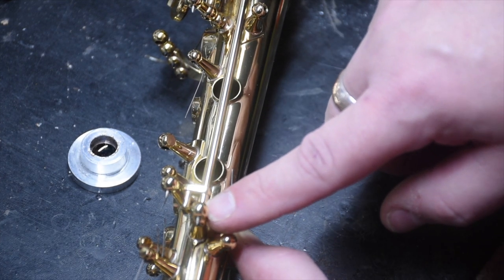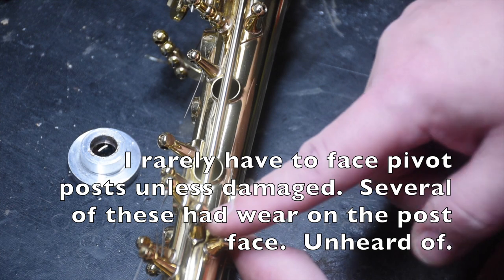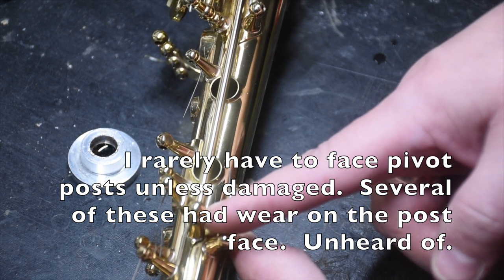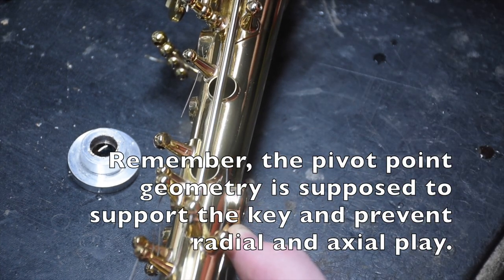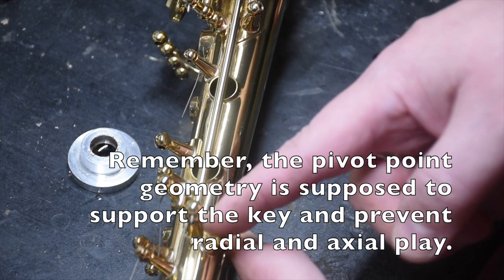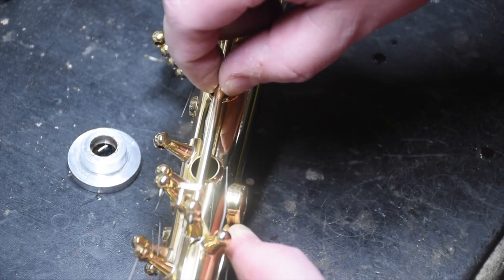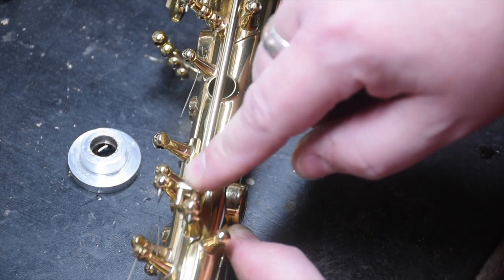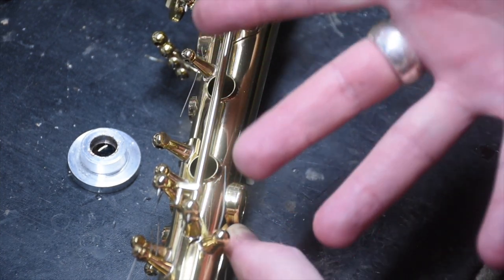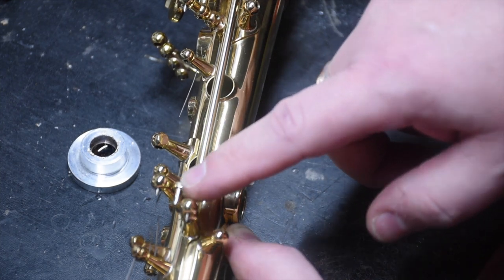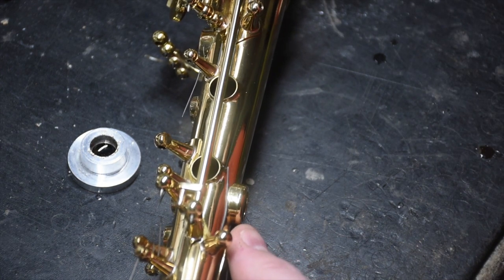If pivots are done right you don't need the end of the key to go all the way to contact. You can make it look visually perfect and still have a couple of thousandths gap in there. So yeah it would wiggle if you didn't have pivots fit right or if you had the stupid spring things in place. Yeah it's gonna wiggle. But do the pivot screws right and then you don't have to fit the keys and have friction where you don't need the friction to start with. End of rant part two.